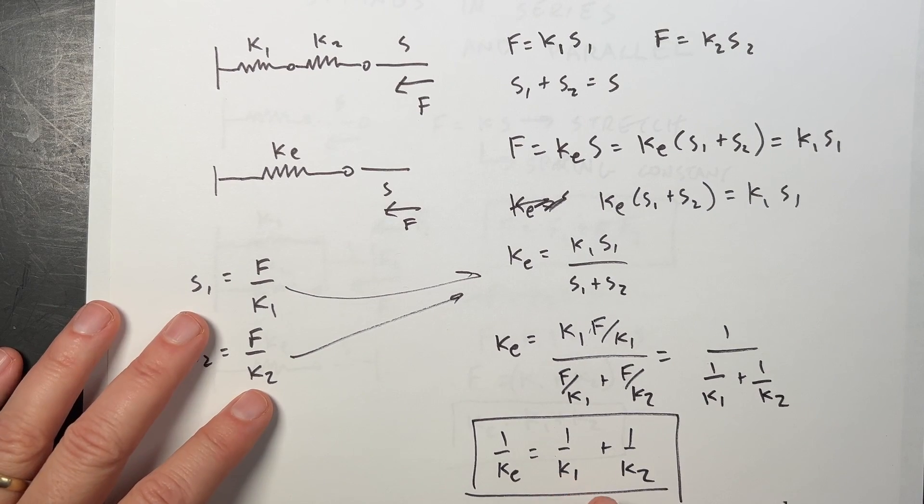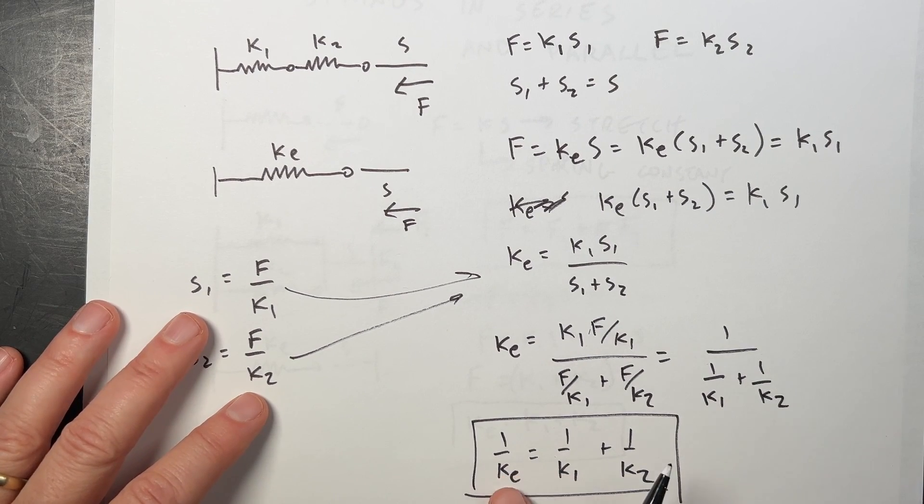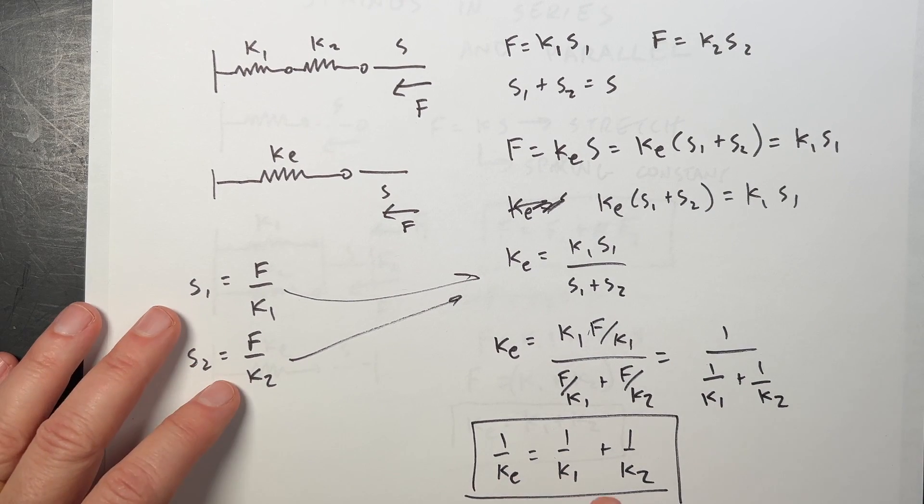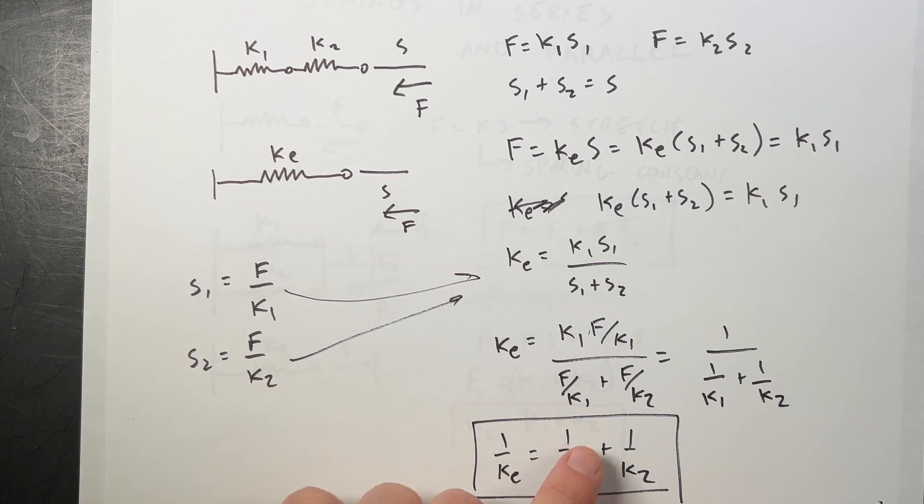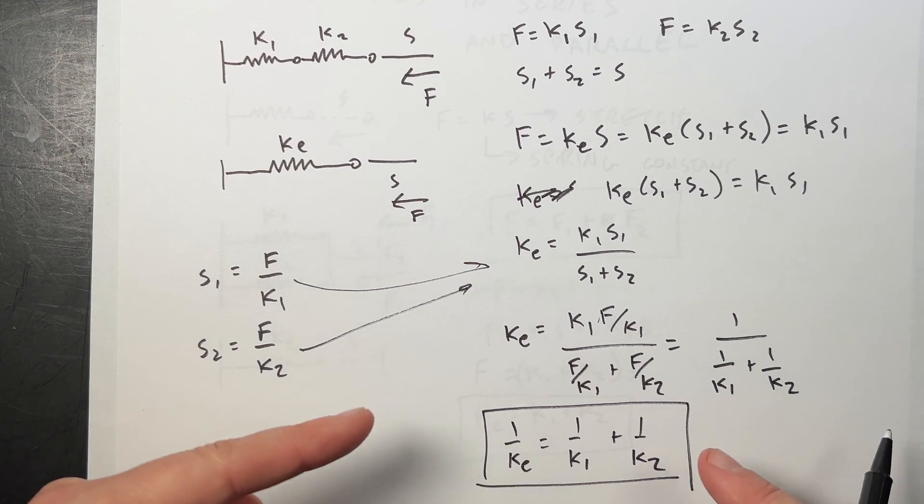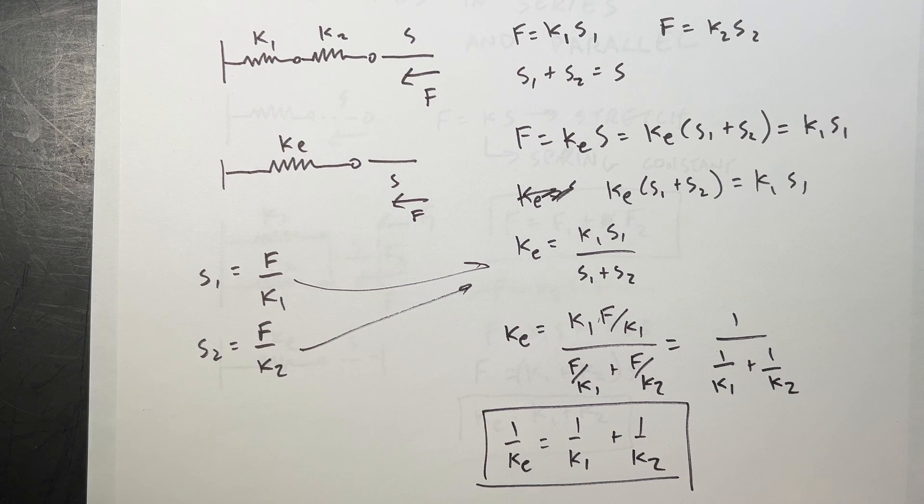And again, you can check this out. If the two springs are equal, then the equivalent spring constant should be half. And you do get that. So I have 1 over K plus 1 over K is 2 over K. Take the inverse of it and I get K over 2. The end.